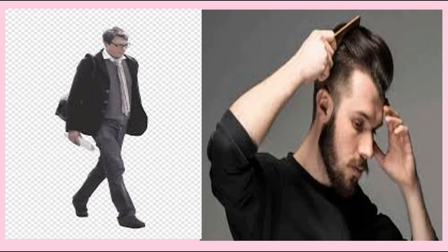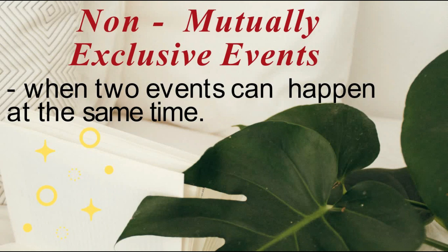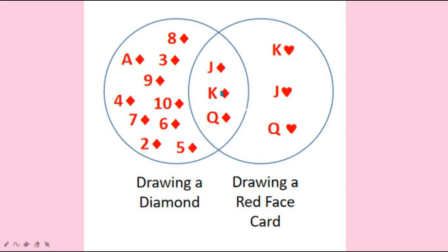Now look at these pictures. Can you perform two actions at the same time, like walking while combing your hair? If your answer is yes, this is an example of a non-mutually exclusive event. When two events can happen at the same time, it is said to be non-mutually exclusive events. Let us show the two events using a Venn diagram: drawing a diamond has 13 elements from ace to king of diamonds.